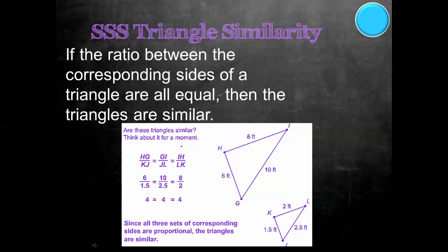For example on this one, HG over JK needs to equal GI over JL, and that also needs to equal IH over LK. So we put the numbers in: HG over KJ, which is 6 over 1.5, then 10 over 2.5, and 8 over 2. If we reduce all of those, they each become 4. So that tells us the sides are proportional, and we can say these two triangles are similar because of the side-side-side triangle similarity postulate.